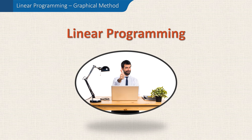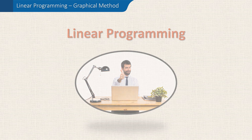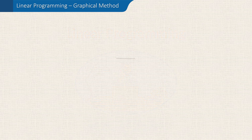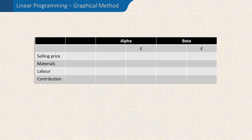Let's look at an example. Let's take two products which require the same type of material and labour: the alpha and the beta. The alpha sells for £84 and the beta £87.